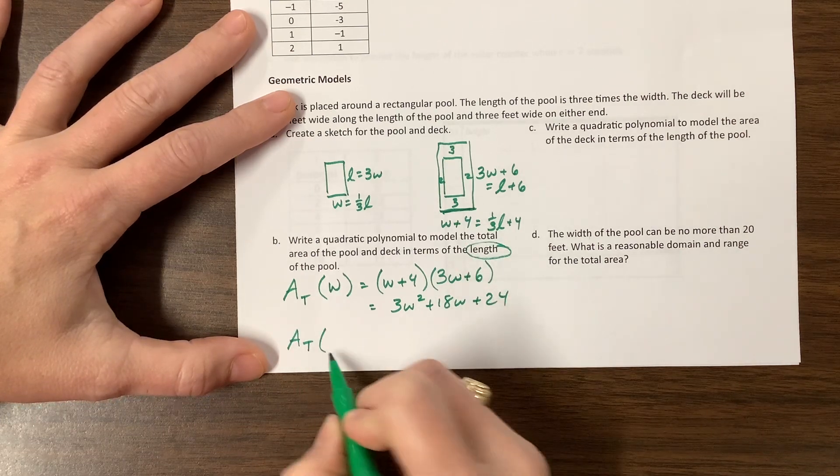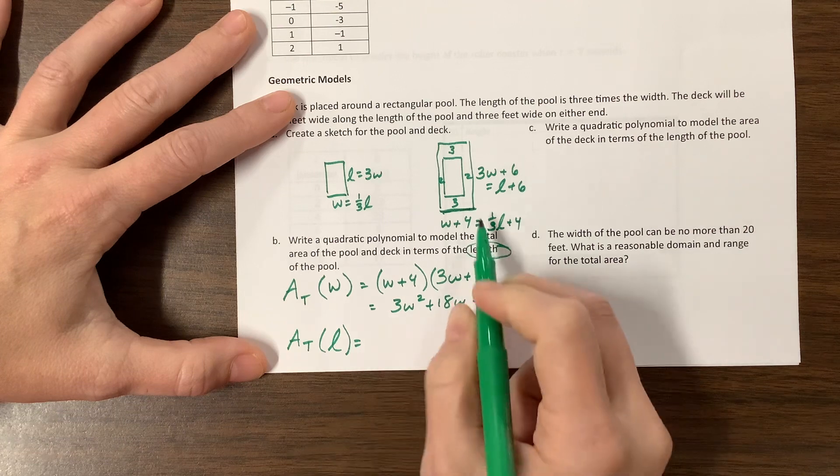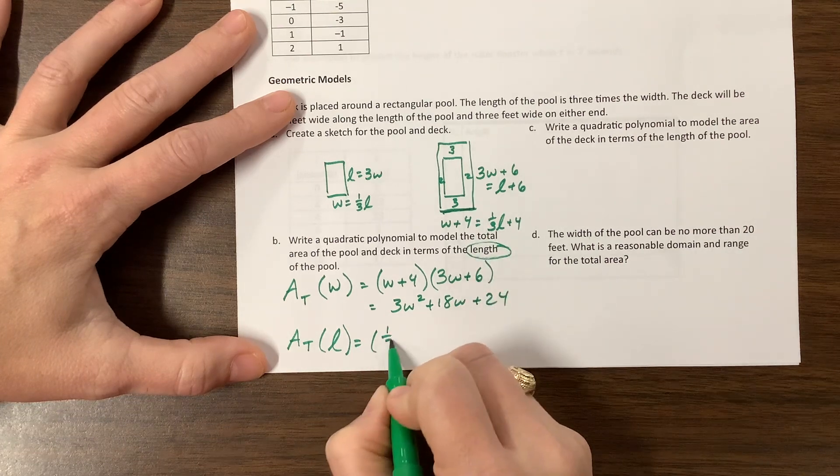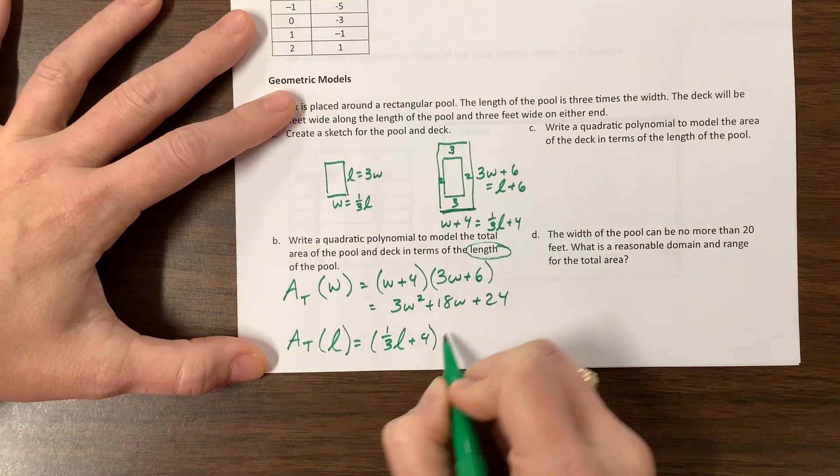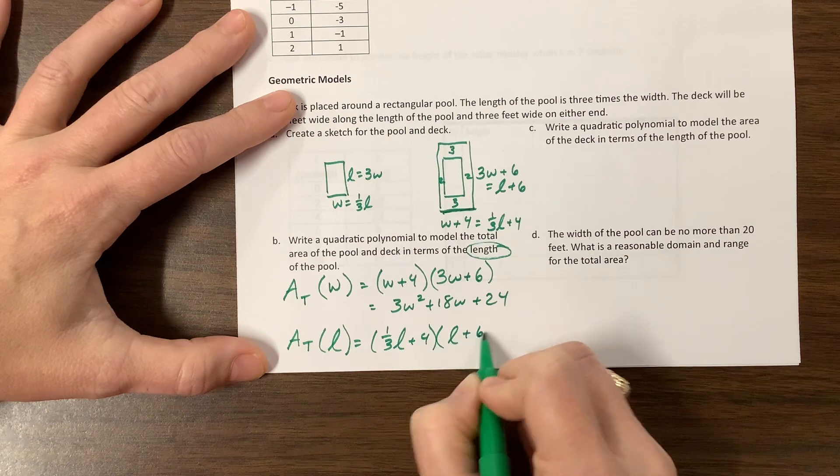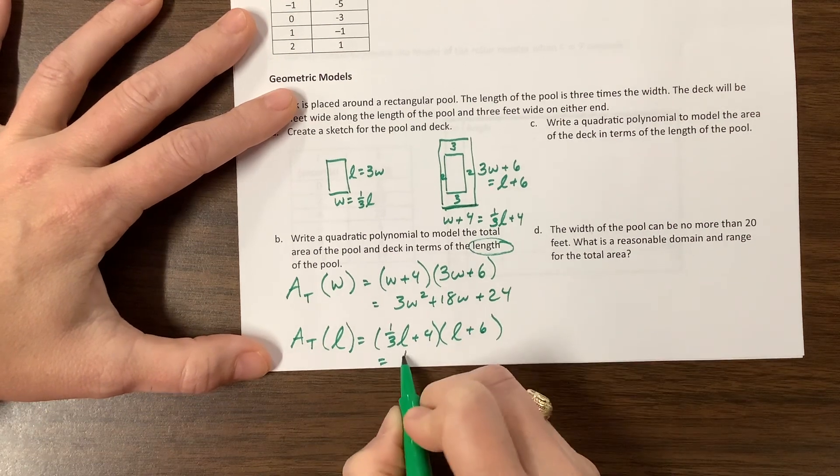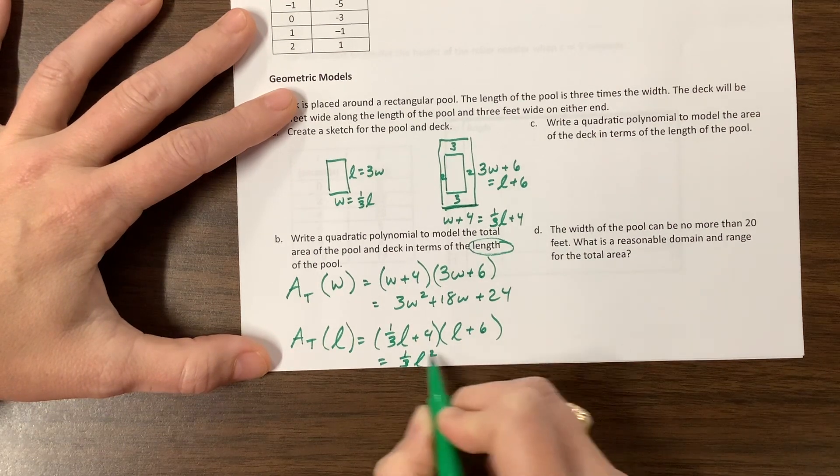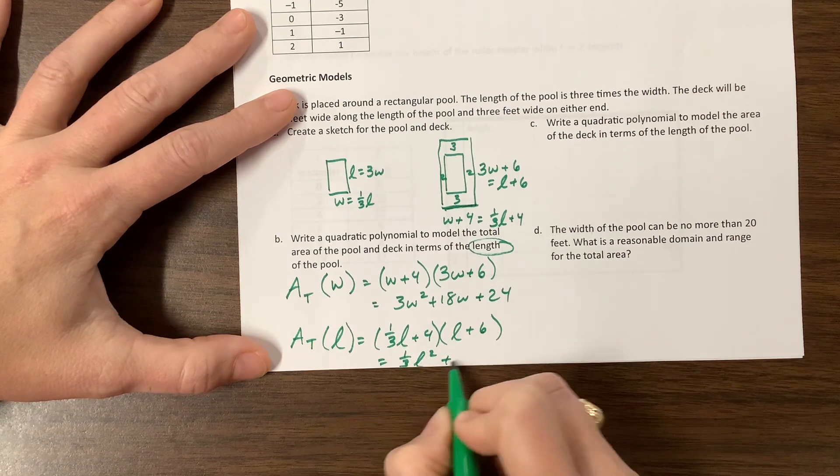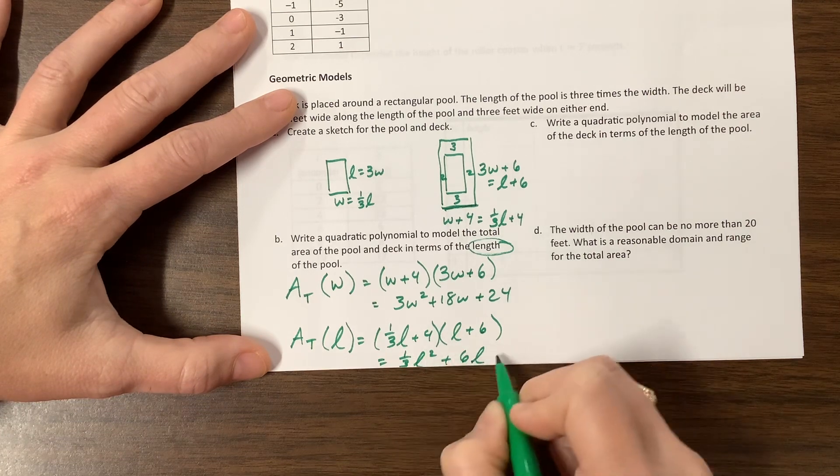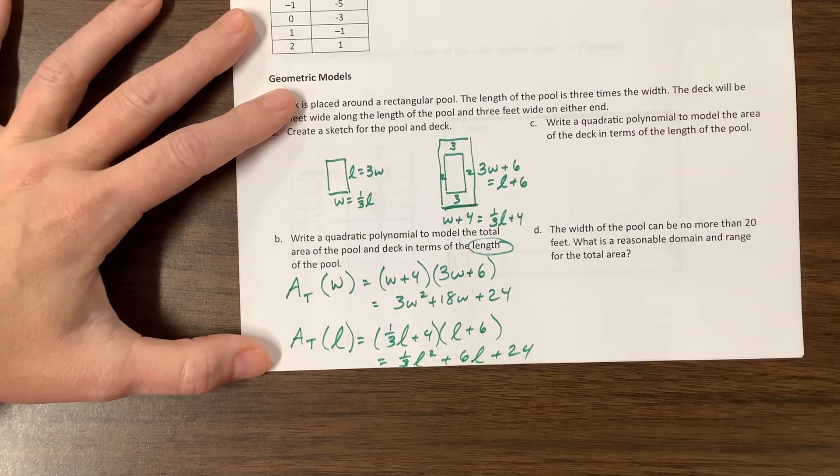So they said in terms of the length, so I need to do the area, the total area, in terms of l, and that would be equal to one-third l plus four times l plus six. If I foil that out, I get one-third l squared. This is four l, that's two l, so that's plus six l plus 24.